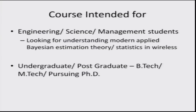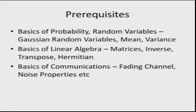This course is suitable for people with a broad set of backgrounds. Whether you are an undergraduate, postgraduate, M.Tech, or PhD student pursuing research in wireless communications, you should find it useful. The prerequisites are standard: basic knowledge of probability, random variables, Gaussian random variables, concepts such as mean and variance, linear algebra, matrices, inverse, matrix transpose, and the Hermitian of a matrix. Some basic concepts of digital and wireless communications — such as modulation and wireless fading channels — are helpful but not required.